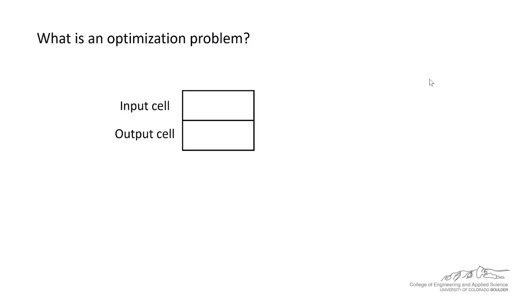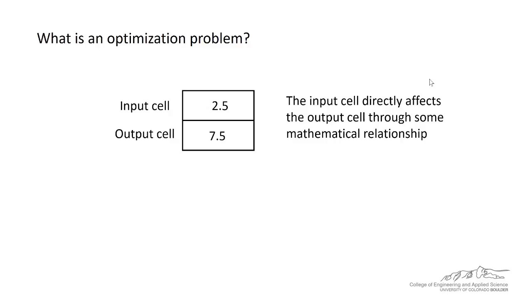Similar to a targeting problem, an optimization problem has an input cell and an output cell. The output cell is some function of the input cell. So the goal is to maximize or minimize the target, which is f. Now, we can do this in Excel using the solver tool.